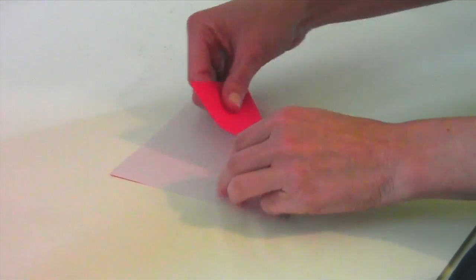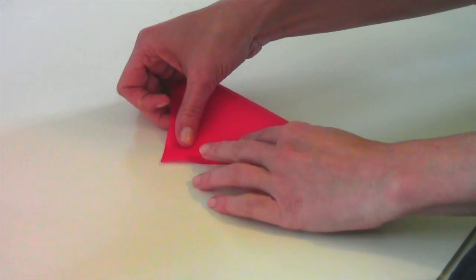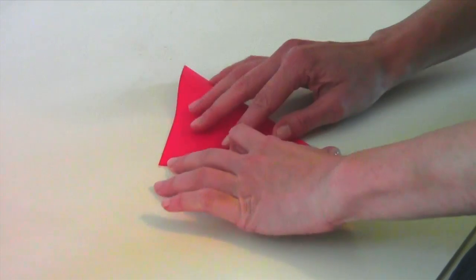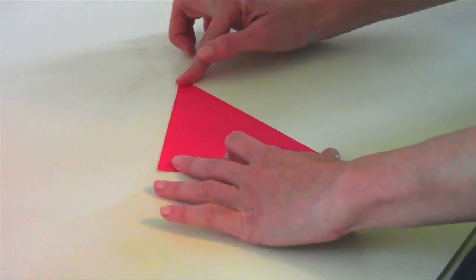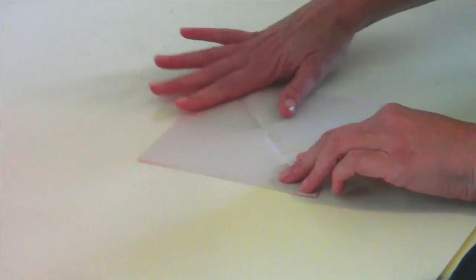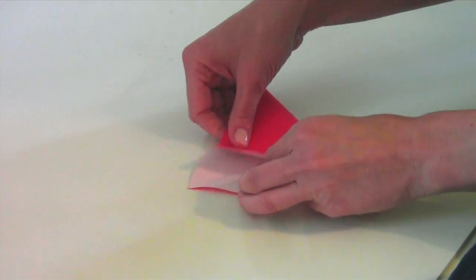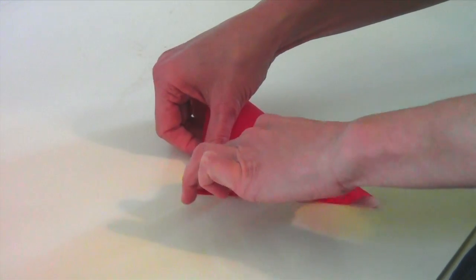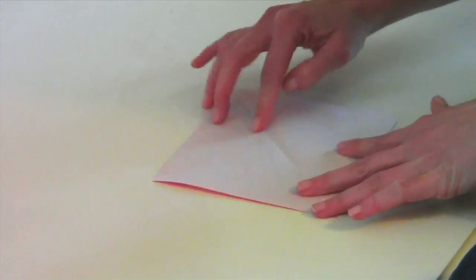You're going to start by turning the paper over so that you are folding with the color on the outside, and you're going to fold from one corner to the other. Get a nice crisp edge, and then open it back up and do exactly the same thing but in the opposite direction.